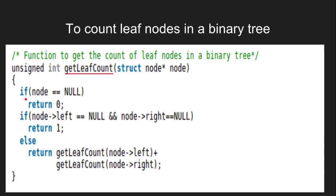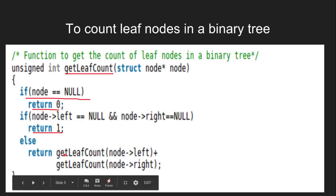If the node is null, we return 0. If left and right child nodes are null, we return 1. Else, we recursively count the number of leaf nodes on left subtree and right subtree and then return the sum of it.